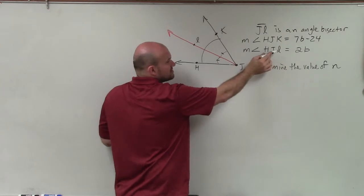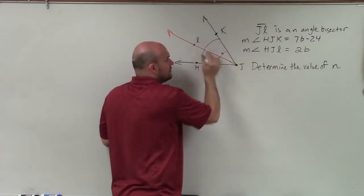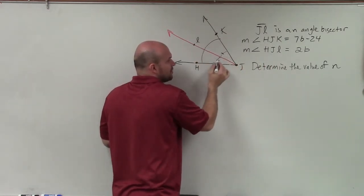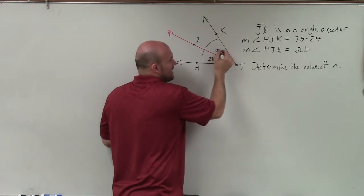The large angle is 7B minus 24. Then they gave us the measure of one of the smaller angles, HJL. Now remember, we said that these are equivalent. So if that's 2B, then that has to be 2B.